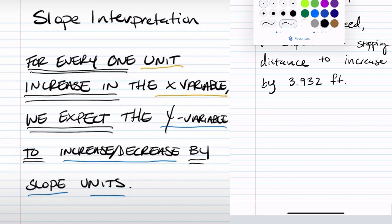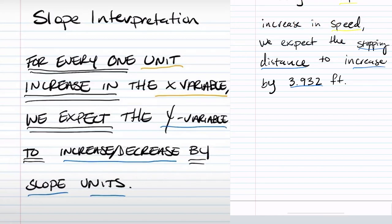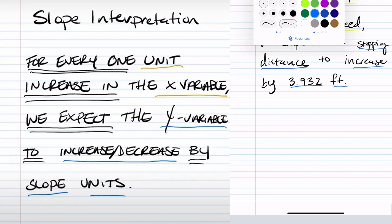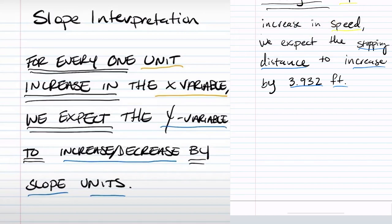So this is a look at how to interpret slope specific for speed and stopping distance, remembering to include units. Hopefully this is helpful. See you in future videos.